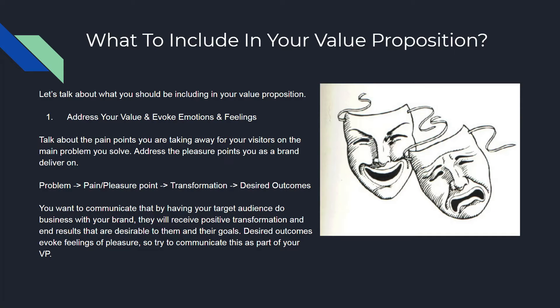Your value proposition needs to incorporate these things. You have a pain and pleasure point, you're looking to make a transformation — this is what your brand is going to do. It's going to take away pain or deliver pleasure points, and this transformation is going to offer the desired outcome that the target market wants. You want to communicate that by doing business with your brand, your audience will receive a positive transformation and end results that are desirable to them and their goals. Desired outcomes evoke feelings of pleasure, so try to communicate that as part of your value proposition.